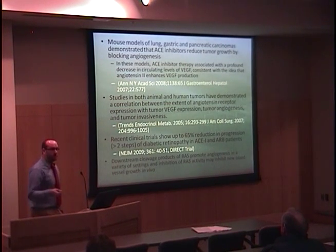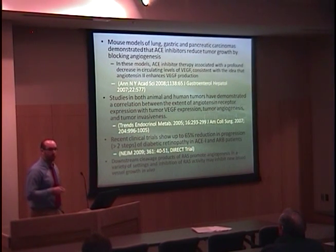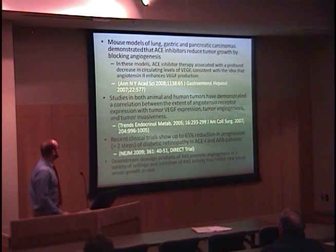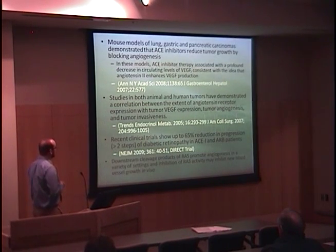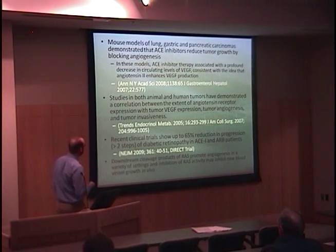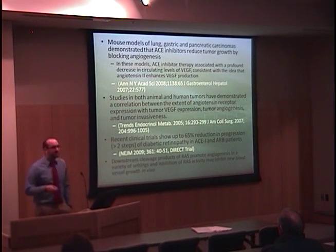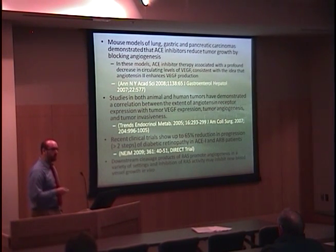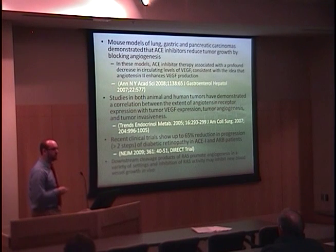They looked at circulating VEGF levels in these animals, and found that in models of cancer treated with ACE inhibitors, VEGF levels in the sera were markedly reduced. Studies in both animal and human tumors have also demonstrated a correlation between the extent of angiotensin receptor expression with VEGF expression in those tumors, tumor angiogenesis, and tumor invasiveness. So the renin-angiotensin system not only affects VEGF elaboration but also the clinical characteristics of the cancer — its ability to invade surrounding tissues, form new blood vessels, and elaborate these cytokines.